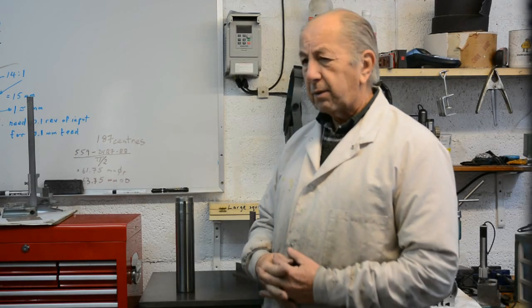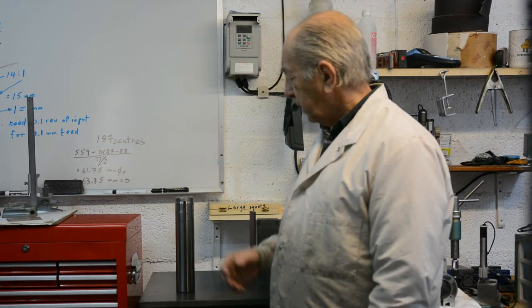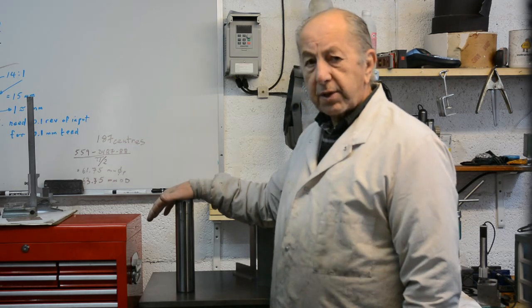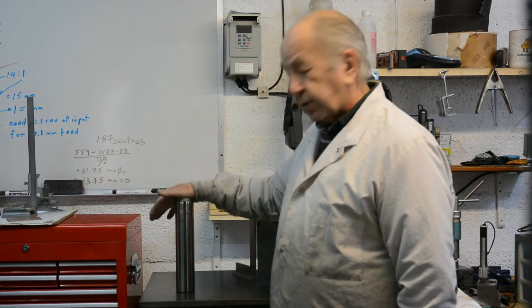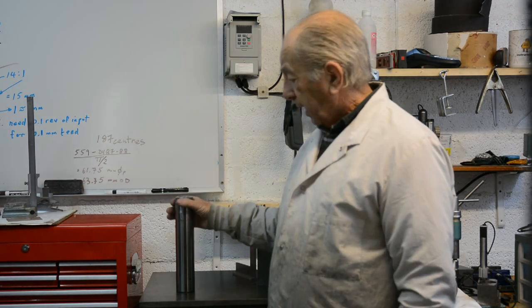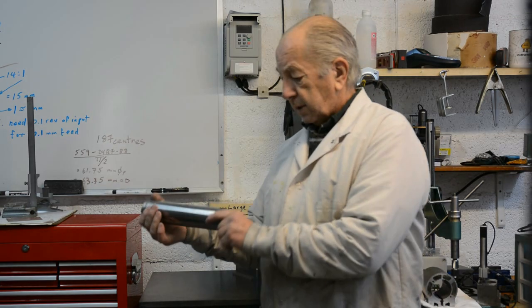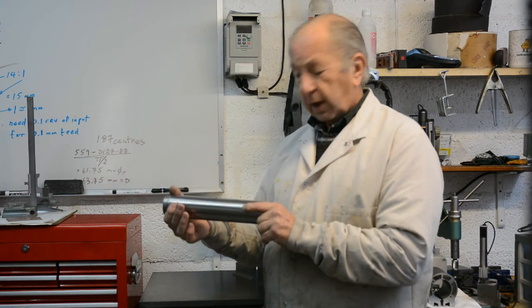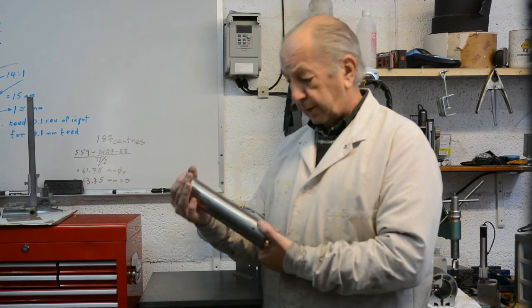Cylindrical Square. Hi, Tony Fowler again with another workshop video. This time we're going to see how I made what's called a cylindrical square out of the tailstop spindle from a large lathe that had been scrapped.